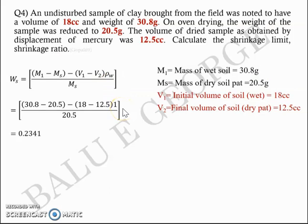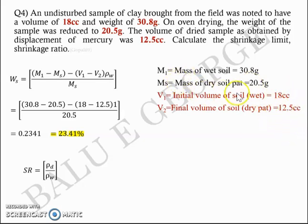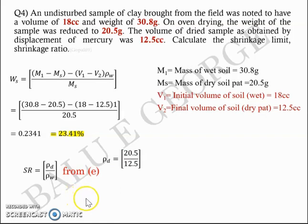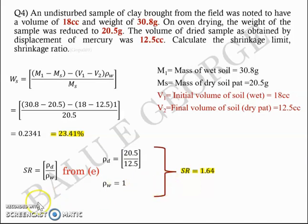Substituting these values in the equation, you get 0.234, or approximately 23.4% as the shrinkage limit. For the second part, the shrinkage ratio R = ρd / ρw. Here ρd = 20.5 / 12.5, which is the mass of the dry soil pad divided by the volume occupied by the dry soil pad. With ρw = 1 gram per cc, dividing ρd by ρw gives a shrinkage ratio of approximately 1.64.